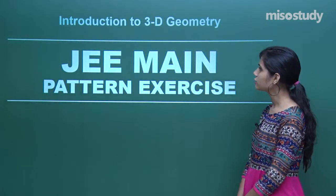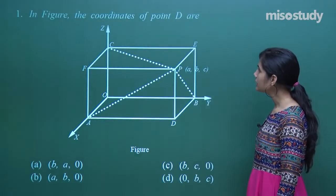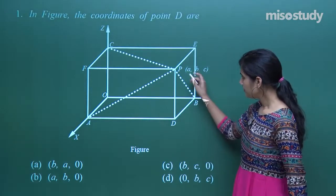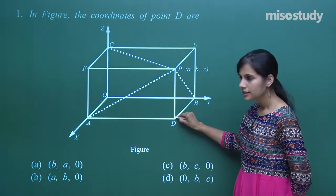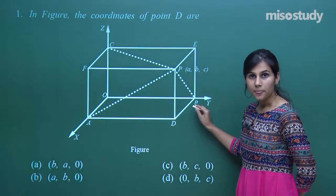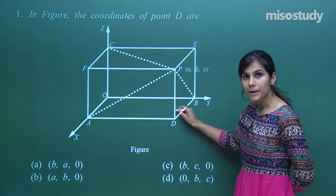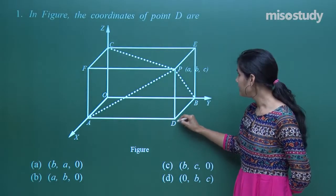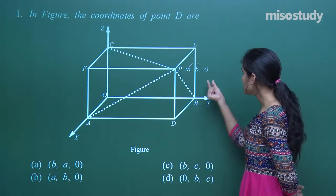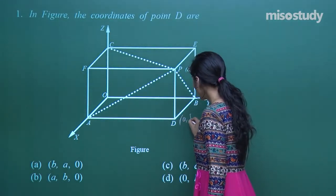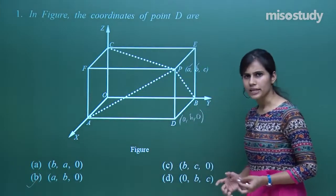Let's discuss questions related to JEE Main pattern exercises for the chapter Introduction to 3D Geometry. The first question asks for the coordinates of point D in the figure. Point D lies completely in the xy plane, so its z coordinate is zero. When drawing a perpendicular from point B to the xy plane, the x and y coordinates remain the same. Therefore, the coordinates of point D are (a, b, 0).